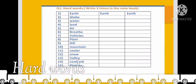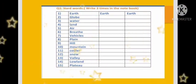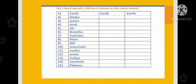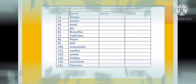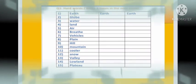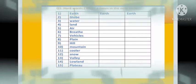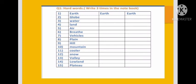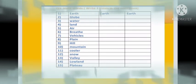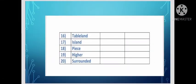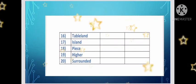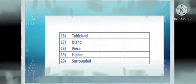Next you see your homework, hard work. Write three times in the notebook number one: earth, globe, water, land, air, breathe, vehicles, plane, hill, mountain, cooler, snow, valley, low land, plateau, table land, island, peace, higher and surrounded.